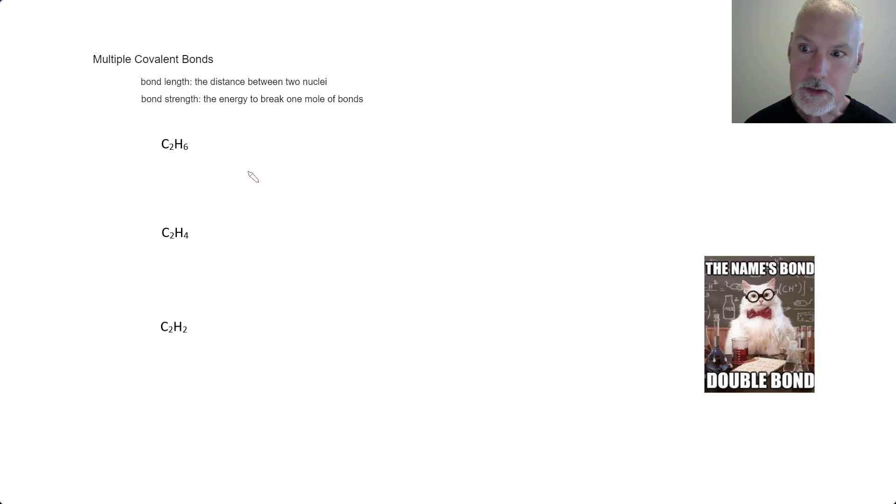Let's start by looking at multiple covalent bondings by looking at these three examples. So the first thing I'm going to do is draw the Lewis formula for each of them. So again, as a quick review, I've got two carbons at four valence electrons each and six from the hydrogen.